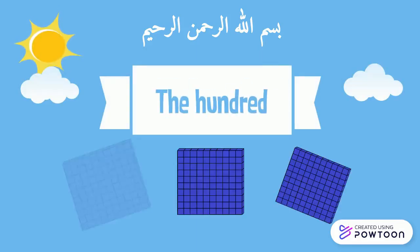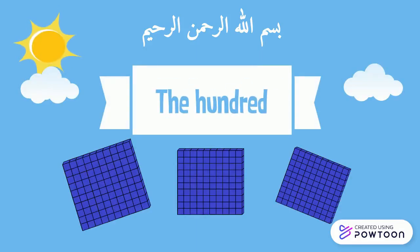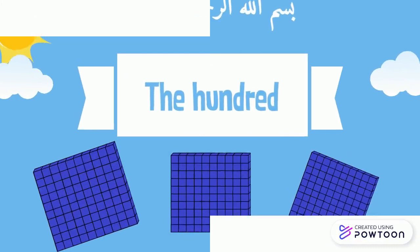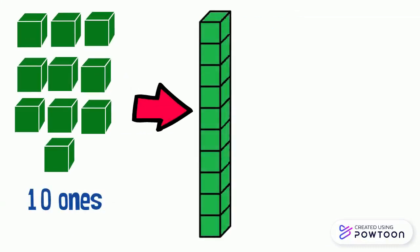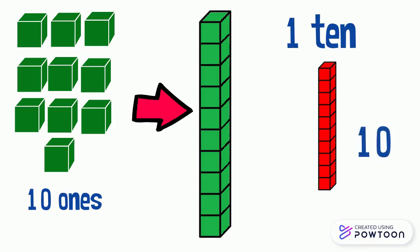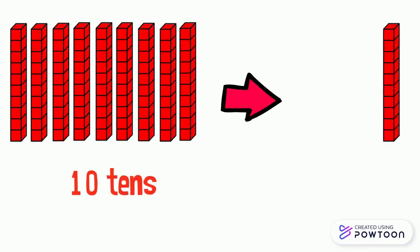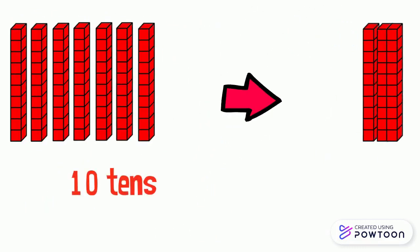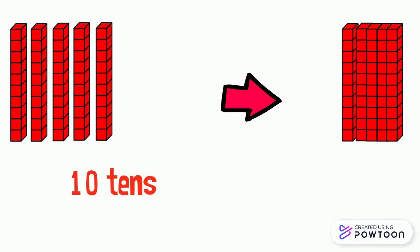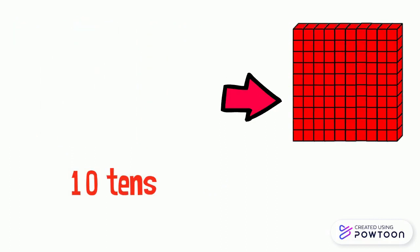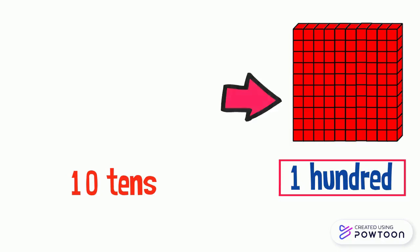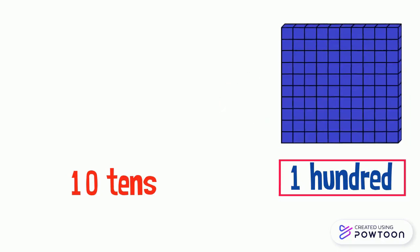Today we are going to talk about the hundreds. Ten ones represent one ten. One ten equals ten. We have ten tens. If we put them together, we will get a block which is called one hundred.